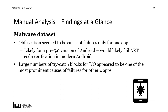For the malware dataset, we observed actually only one app with obfuscation, but it caused very massive decompilation failures. Upon closer analysis, it appears to be an older malware sample for an older version of Android, because the nature of the obfuscation would most likely fail the runtime verification done in modern Android. For the other four apps we could not find any signs of obfuscation; instead, decompilation failures occurred for similar reasons as with open source apps, and also a large number of try-catch blocks for I/O appeared to be one of the most prominent causes of failures.